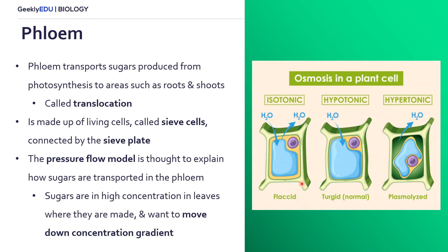We can think of this using osmosis concepts: an isotonic solution means equal concentration inside and outside the cell, so water flows both directions. A hypotonic solution means water concentration is higher outside, so it moves down its gradient into the cell. Hypertonic means water concentration is high within the cell, so it moves outward. This same idea applies in phloem, but instead of water concentration, it's the concentration of sugars.